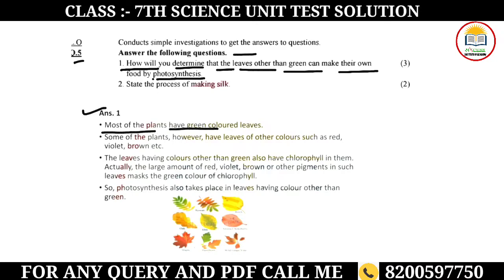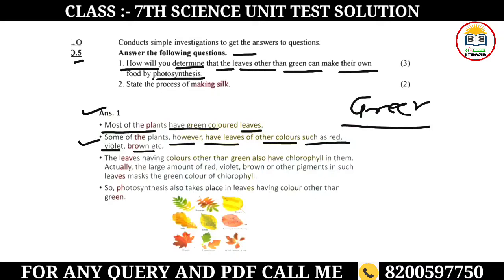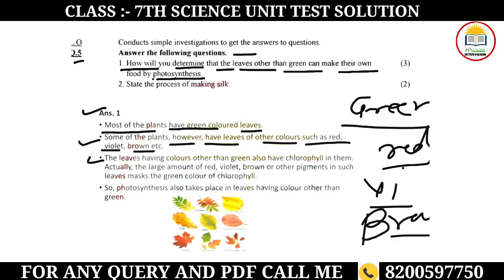Most plants have green colored leaves, as you know. Some plants have leaves of colors such as red, violet, and brown. The leaves have green color due to chlorophyll. Actually, a large amount of red, violet, brown, and other pigments in such leaves mask the green color of chlorophyll. So photosynthesis also takes place in leaves having colors other than green.